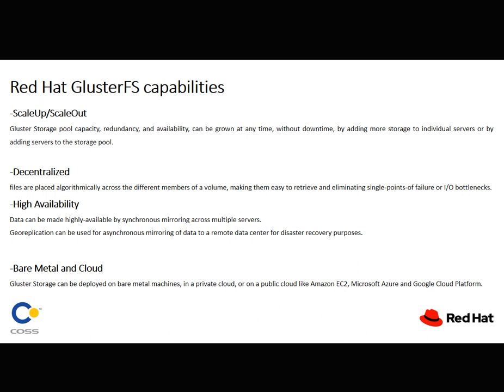Next, we will discuss the capabilities of GlusterFS: scale up and scale out, decentralized, high availability, and bare metal installation. Scale out and scale up means you are able to expand your platform without downtime — it's very important. You can expand your pool, capacity, and availability without downtime. Decentralized means it does not store your information over one server or one node; it will be spread over the whole servers inside the GlusterFS network platform. We are able to install this over private cloud, public cloud, Amazon EC2, Microsoft Azure, or Google Cloud.